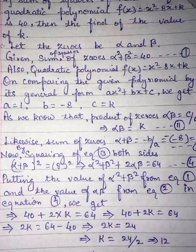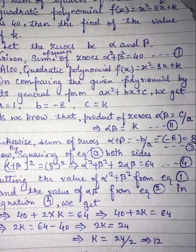As we know that the product of zeros alpha beta is equal to c upon a. We have value of c, K upon 1 is equal to alpha multiplied by beta is equal to K. Let's consider this equation number 2.